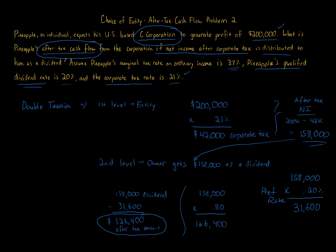You might also be asked: what is the total amount of tax paid in this situation? It's going to be $42,000 of corporate tax plus $31,600 of individual tax paid on the dividend. Adding those two numbers together gives $73,600. If we divide that by the $200,000 amount...